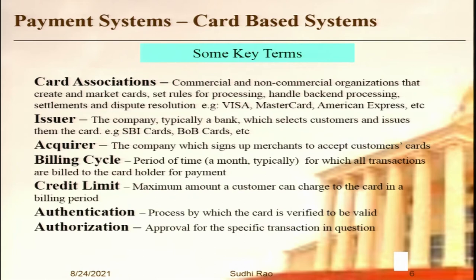Each domain uses its own set of terms and jargon, so let us look at a few key terms. First is card association — commercial and non-commercial organizations that create and market cards, set rules for processing, handle back-end processing, settlements and dispute resolution. These are called card networks or card associations. For example, Visa, Mastercard, and American Express are all card associations. Both Visa and Mastercard were actually formed by groups of banks in the US. Many banks are members of these associations, and they come up with new rules for issuing and using cards and handle all back-end accounting.